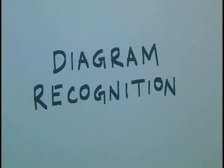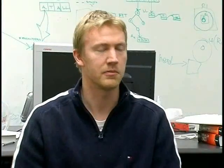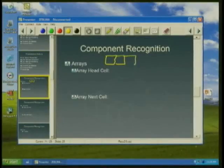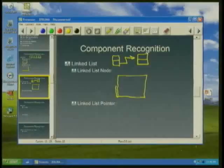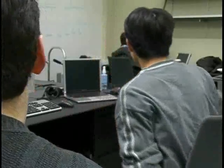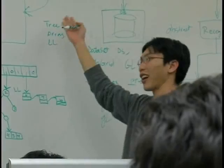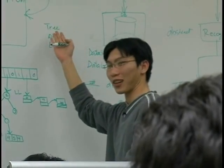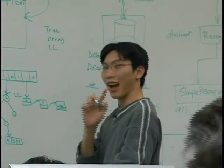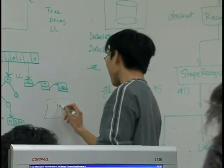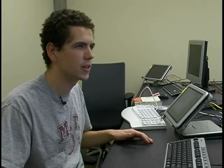The Diagram Recognition Project is about recognizing data structures. The most common ones that computer scientists use are arrays, trees, and linked lists. The job is just to draw it on the screen and render it. My part is to recognize the initial small parts of the diagram, like a circle, a line, a square, or an arrow.